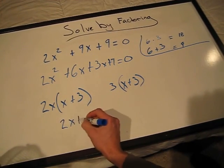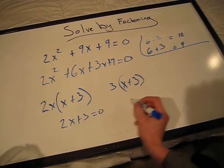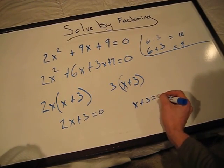So we have 2x plus 3 equals 0, and x plus 3 equals 0.